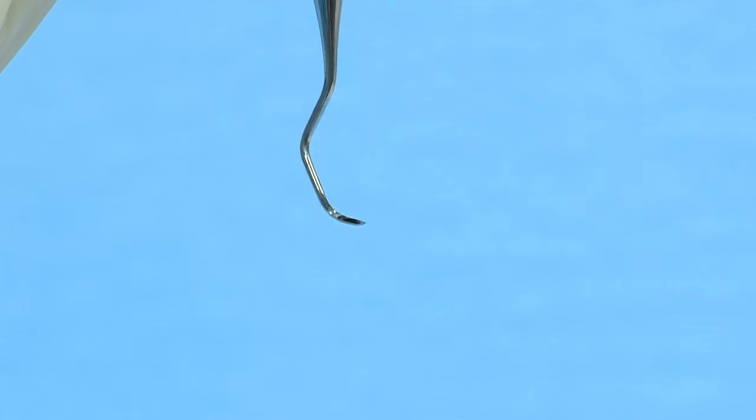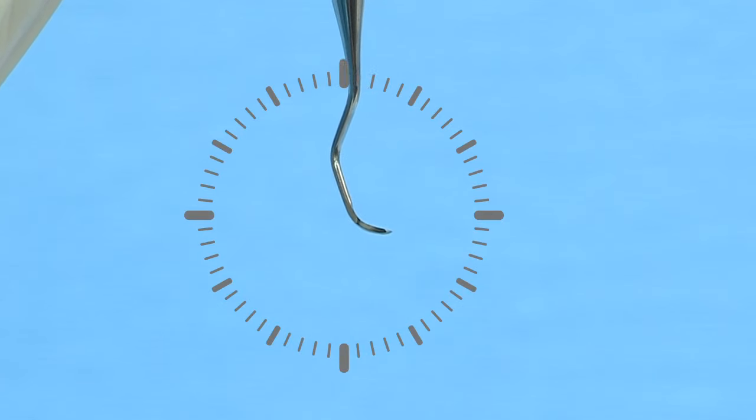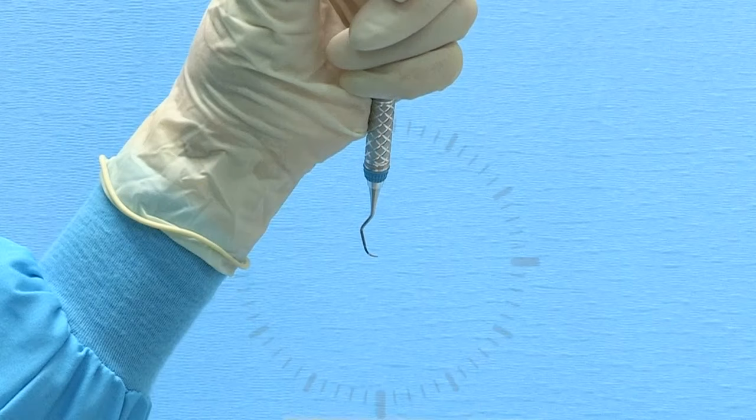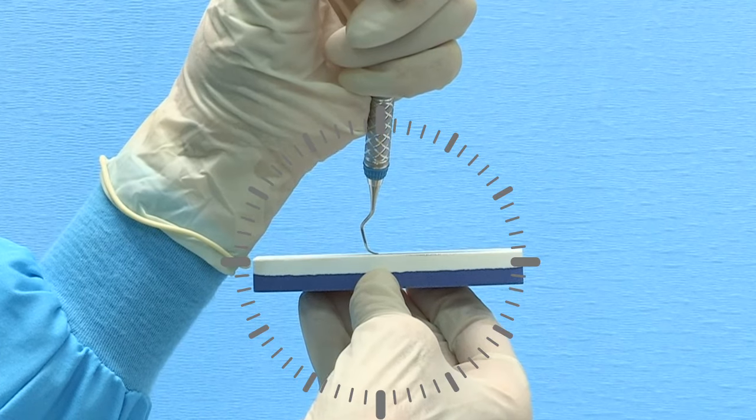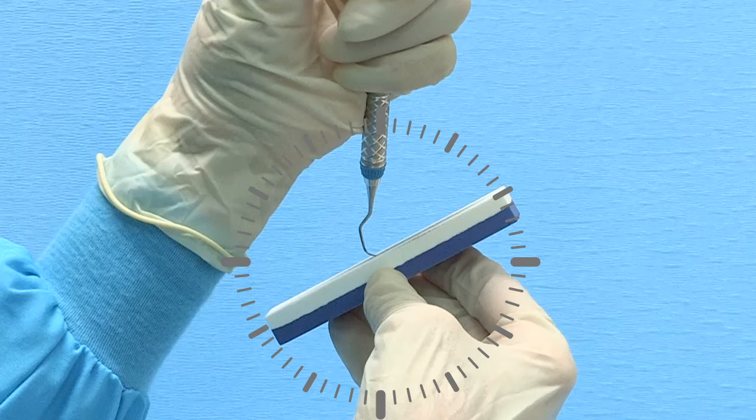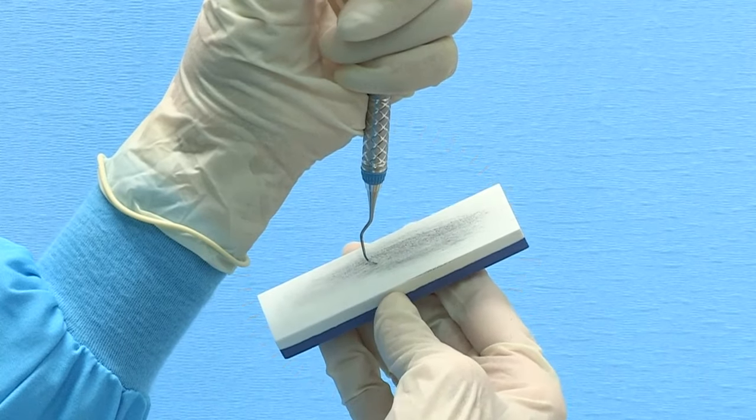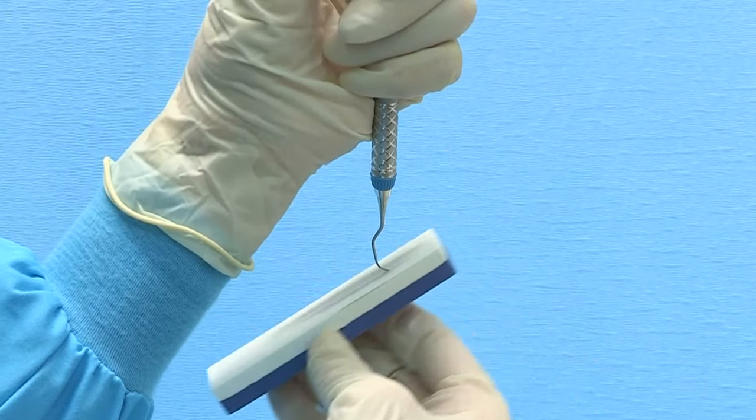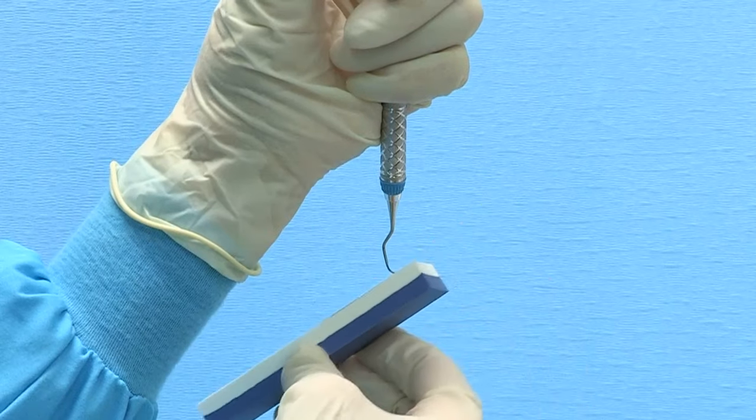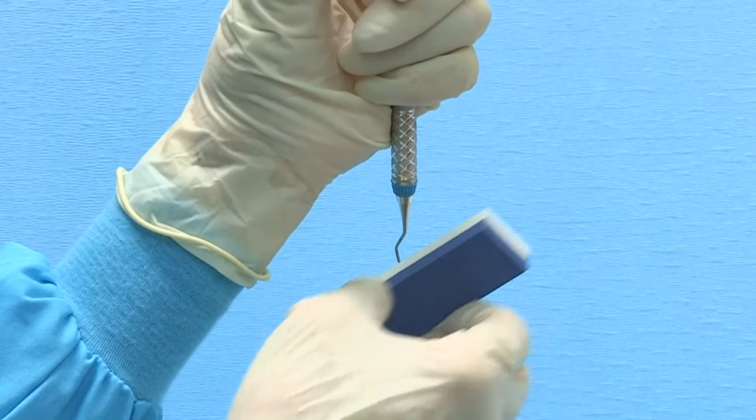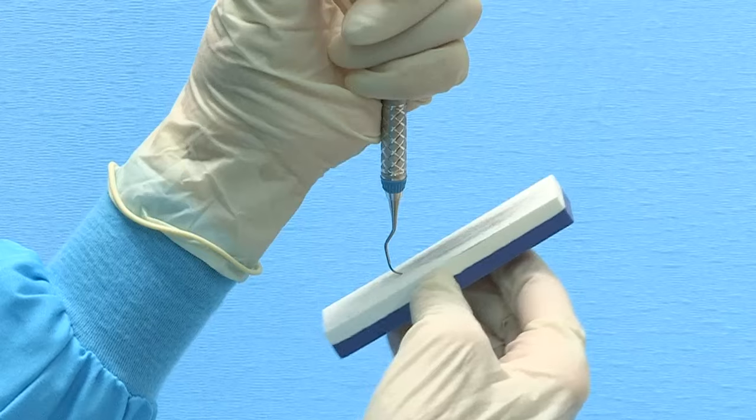To maintain the rounded shape of the curette toe, rotate the instrument handle so that the toe is pointed at 3 o'clock. Position the stone underneath the blade at 3 o'clock and tilt upward toward the 2 o'clock position. Move the stone in a consistent up and down motion, overlapping strokes, and rotating around the toe to maintain the rounded shape.